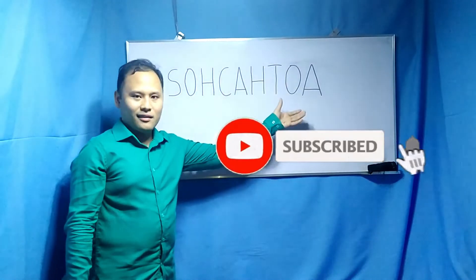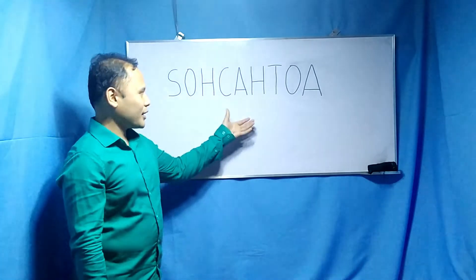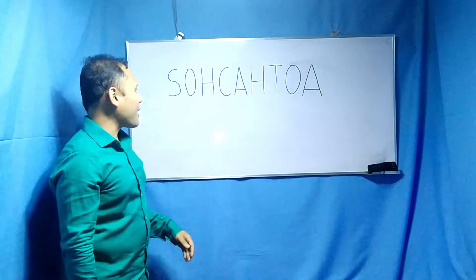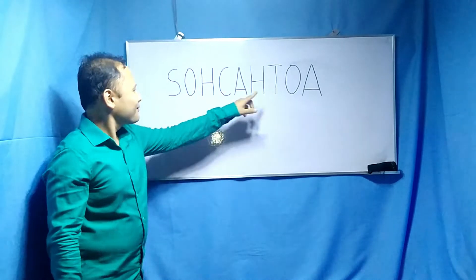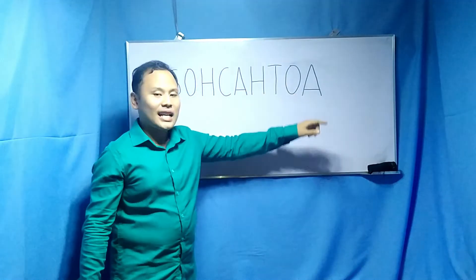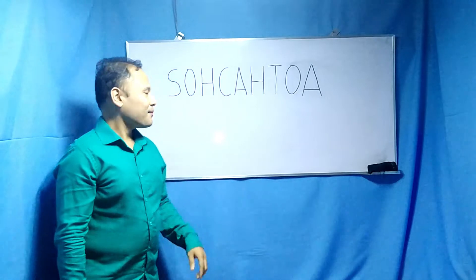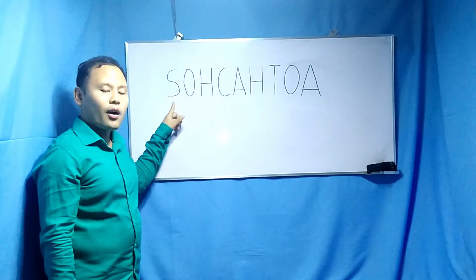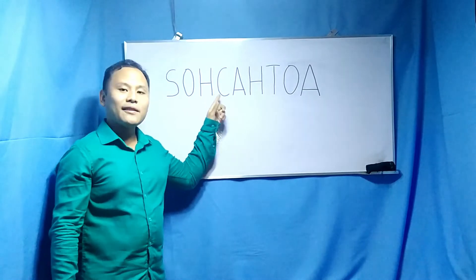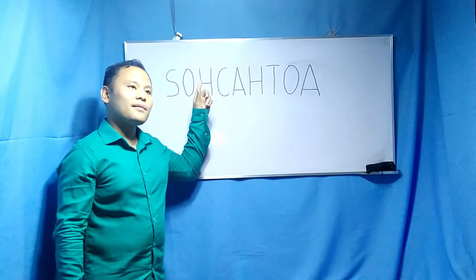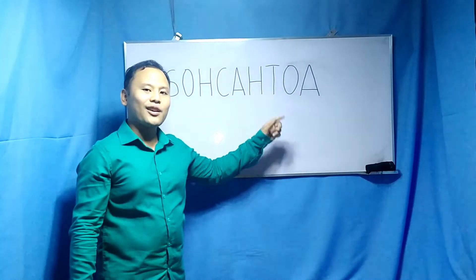SOHCAHTOA is a guide whenever you solve for the missing angle or the missing side of a right triangle. In this acronym, each letter has meaning. O stands for opposite, A stands for adjacent, H stands for hypotenuse. S means sine function or value of a chosen acute angle theta. C is the cosine function of your chosen acute angle theta. T is the tangent function or value of your chosen acute angle theta.